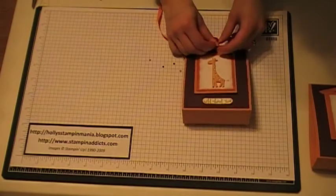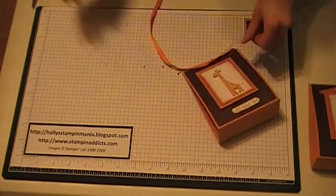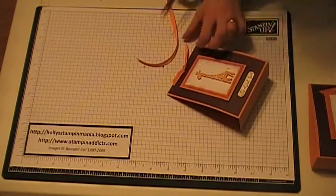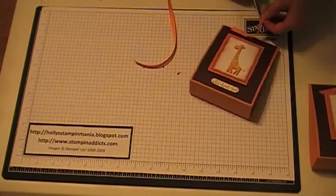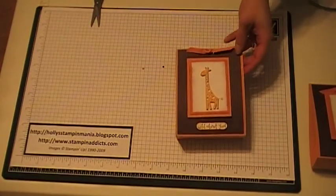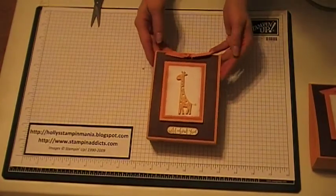And you can do a bow, double knot, fancy bow, whatever you want. I'm just doing a knot. Let's snip the ends off. And there you go. You've created this little treat box.